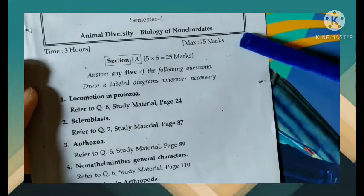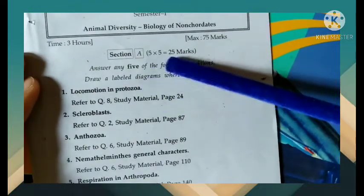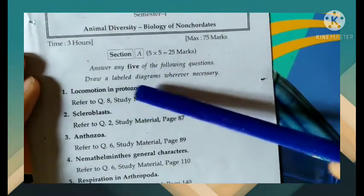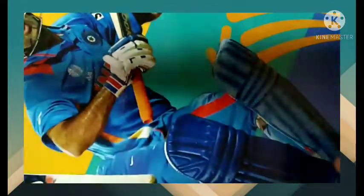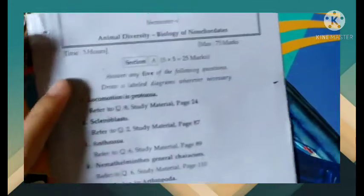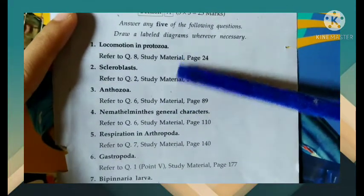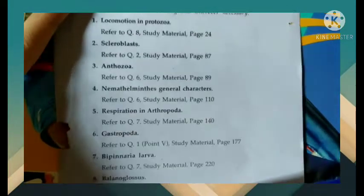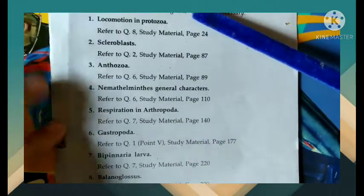75 Marks. Section 1 — Answer any 5 of the following. Draw a labelled diagram wherever necessary. Total in Section 1, there are 8 short questions — we need to answer 5 of them.